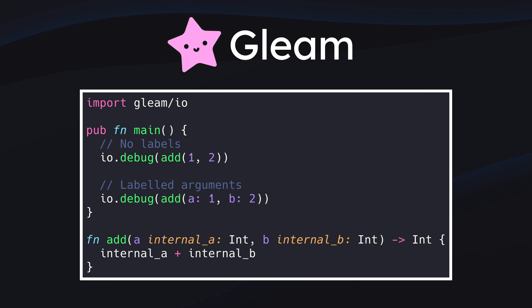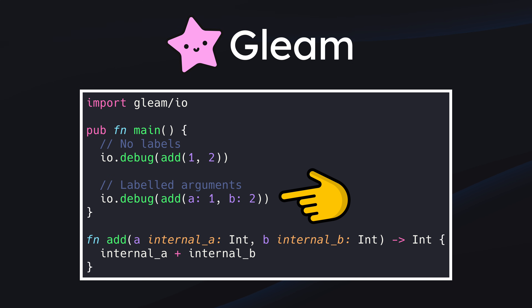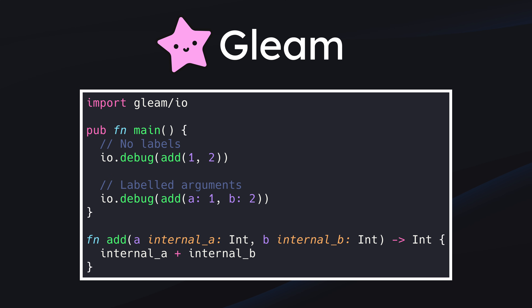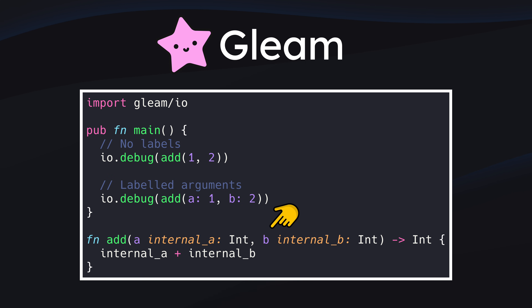Gleam functions have something called labeled arguments. Rust doesn't have them, but named function parameters are a pretty common concept. The general idea is to help the developer when calling a function by allowing them to rely on parameter names instead of memorizing the order of arguments. Not only does Gleam support named parameters, it takes things a step further and allows you to give parameters both internal names — the names by which you refer to the parameter inside the function body — and external names, which you use at the call site. I personally haven't been able to think of a use case for this, and on the surface it seems like it might even be a detriment to code readability.